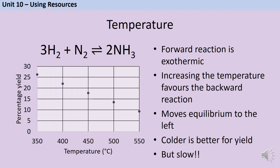Explaining the temperature used in the Haber process is a bit more complicated. In a reversible reaction there is always one exothermic and one endothermic reaction. The exothermic reaction releases energy and heats surroundings, while the endothermic absorbs energy and cools things down. Le Chatelier's principle tells us that if we heat up a system at equilibrium, it will favour the endothermic reaction to cool it down; likewise, cooling it will favour the exothermic reaction.